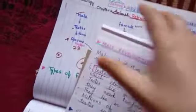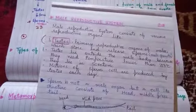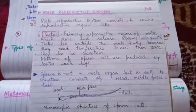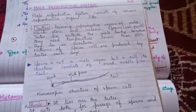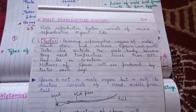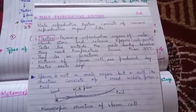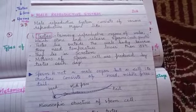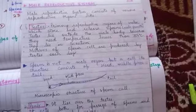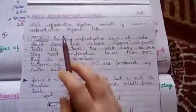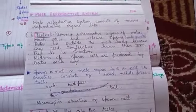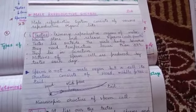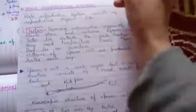Now we come to the male reproductive system. Here also we are concerned with the human male reproductive system. I have drawn the outline of the female reproductive system; you will open your book and draw the male reproductive system yourself. The male reproductive system also consists of various organs, just as the female reproductive system does. The primary reproductive organs in males are the testes.